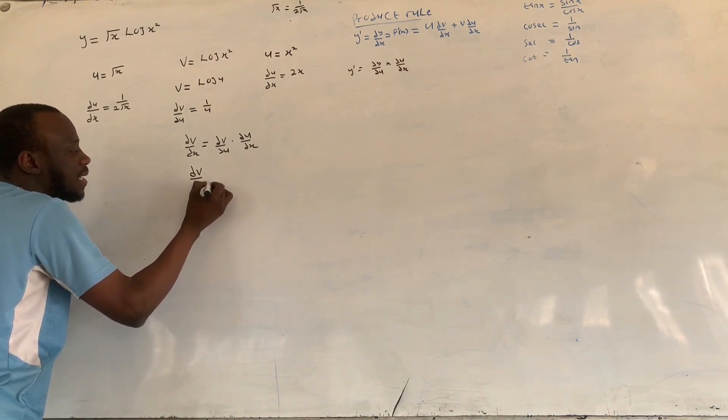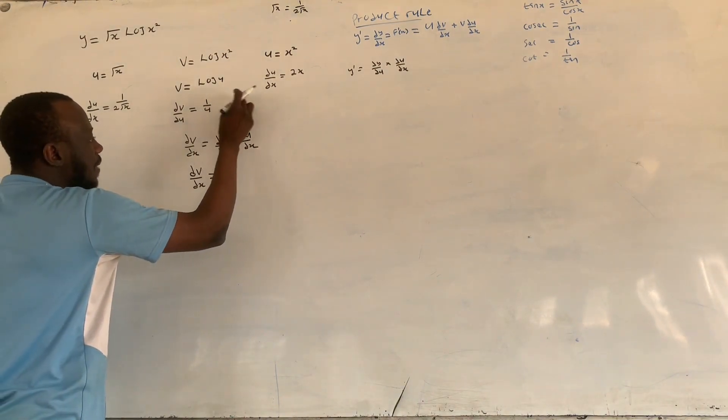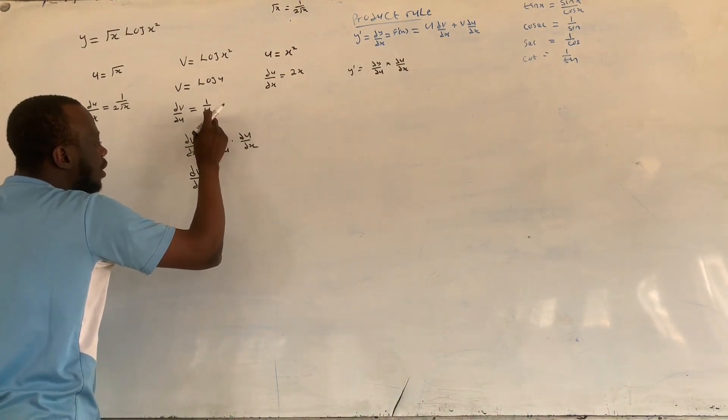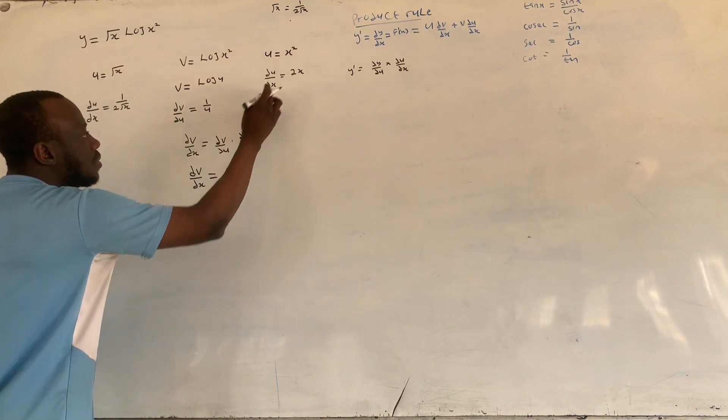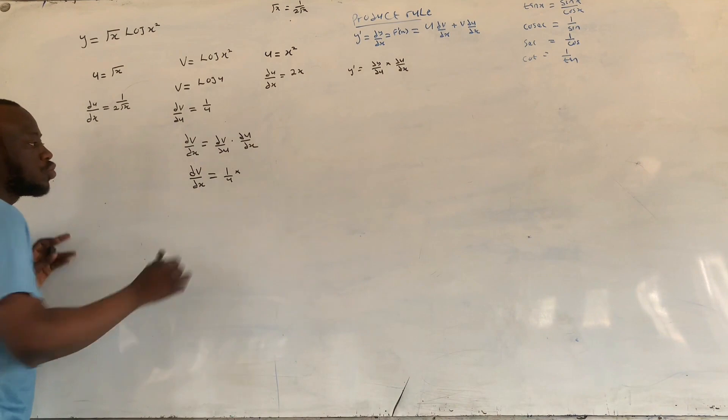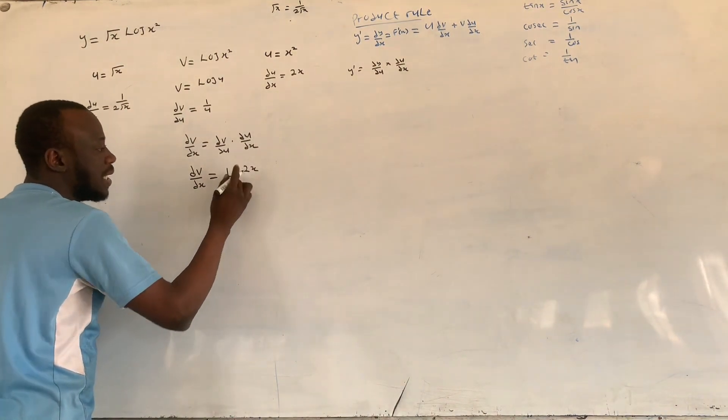Equivalent to what? This times dv over du which is 1 over u, times du over dx which is 2x. This is also something like here we have 2x times 1, 2x over u here.